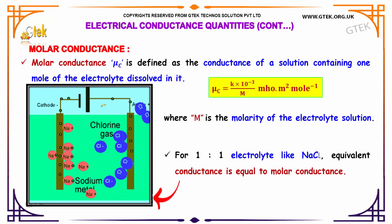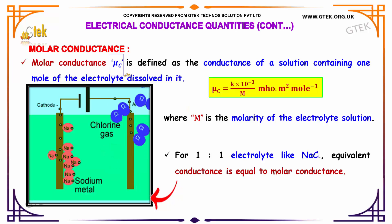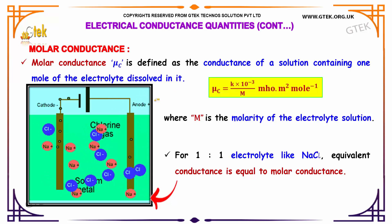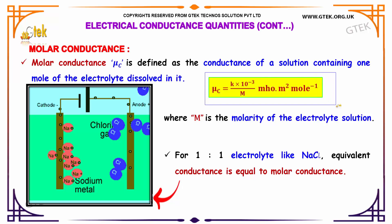Now let us discuss molar conductance. Molar conductance mu_c is defined as the conductance of the solution containing 1 mole of electrolyte dissolved in it. Molar conductance mu_c equals k × 10⁻³ divided by m, with units of siemens·meter²·mol⁻¹, where m is the molarity of the electrolyte solution.